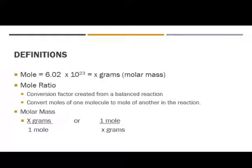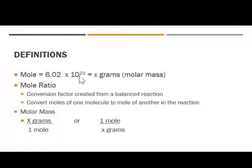It's titled Mass to Mass Calculations, and you can look at example 12.3 in your book. A couple definitions to start off with. We're going to start with our mole, and our mole equals 6.02 times 10 to the 23rd things — really don't have a unit on there. And it also equals x grams, which is our molar mass.